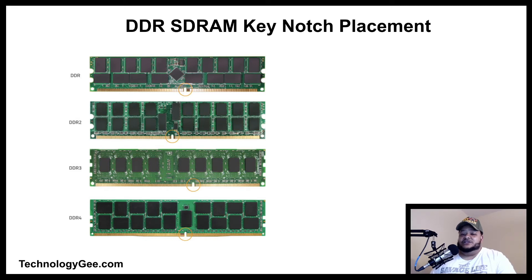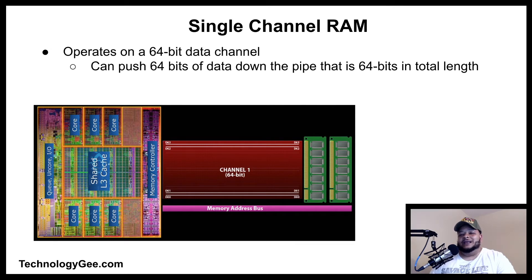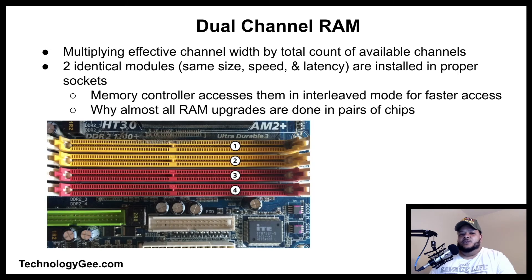Single channel RAM operates on a 64-bit data path, which means it can push 64 bits of data down the pipe — 64 bits in total length.